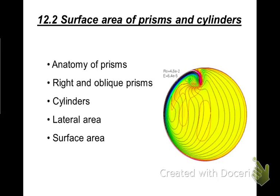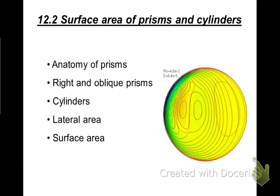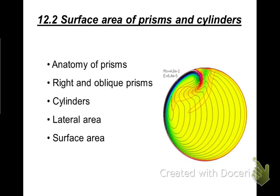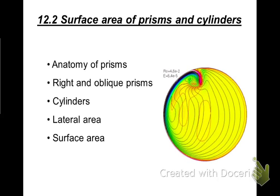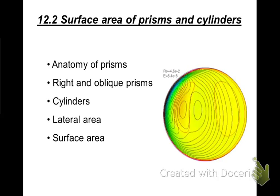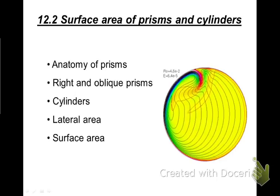Section 12.2 is the study of the surface area of prisms and cylinders. Our vocabulary will be the anatomy of prisms, right and oblique prisms, cylinders, lateral area, and surface area.